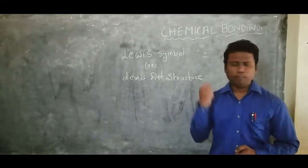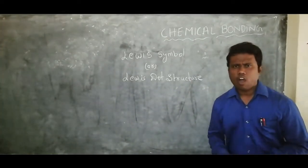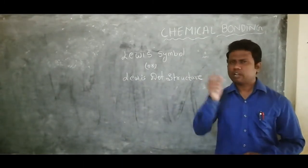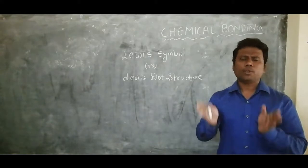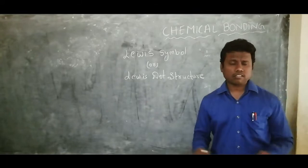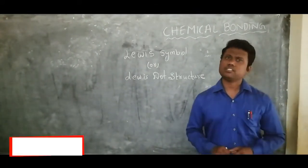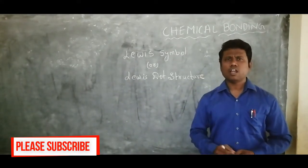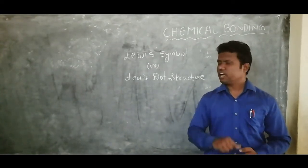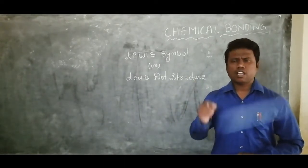Those elements are least reactive — they do not react. That makes the reason for the formation of chemical bonding. We understand chemical bonding only by observing the noble gases in our periodic table. If noble gases elements were not there, it would be very difficult to understand how elements combine. We observe that noble gas elements have a valency of zero.